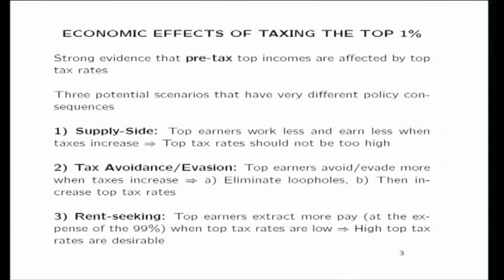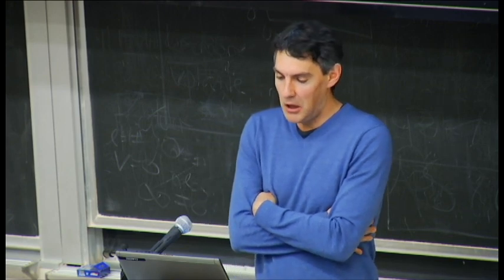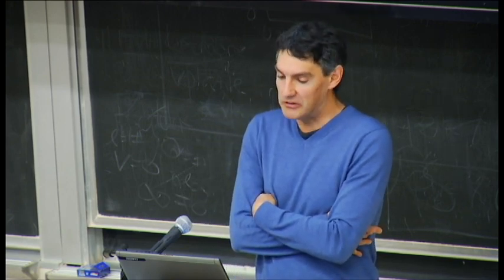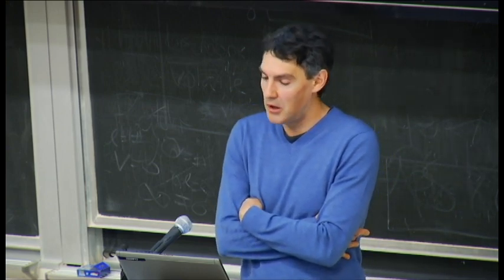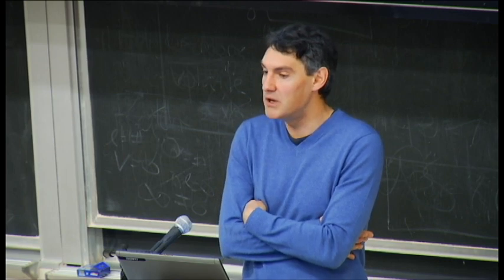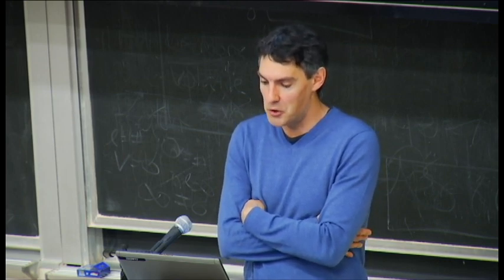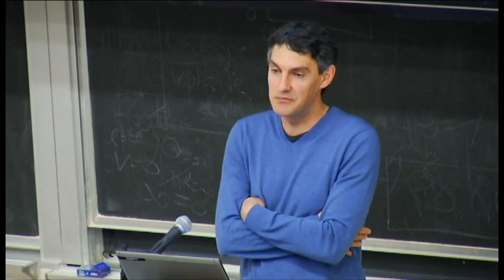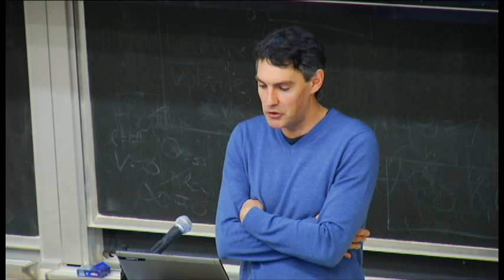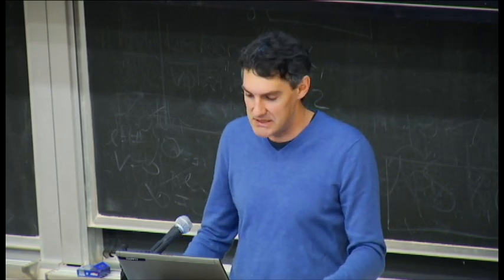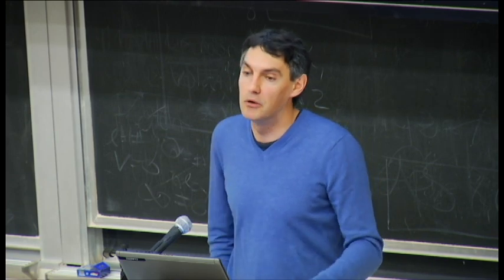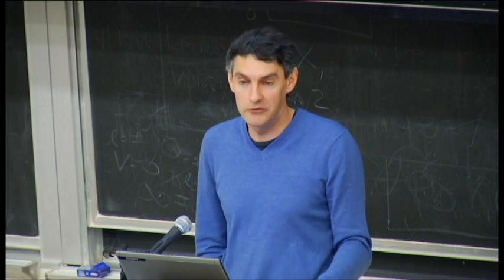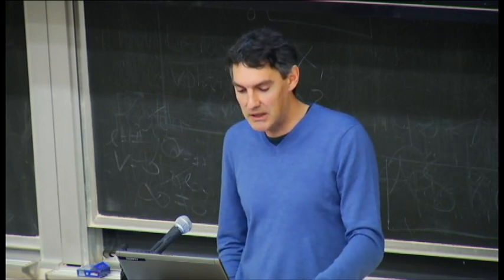The second scenario is tax avoidance or evasion, whereby top earners avoid or evade more when taxes increase. Under this scenario, the policy consequence is very different: you should eliminate loopholes and tax avoidance opportunities in the current tax system. There are examples of countries successfully eliminating tax avoidance opportunities, after which it becomes possible to raise top tax rates productively and generate significant revenue.